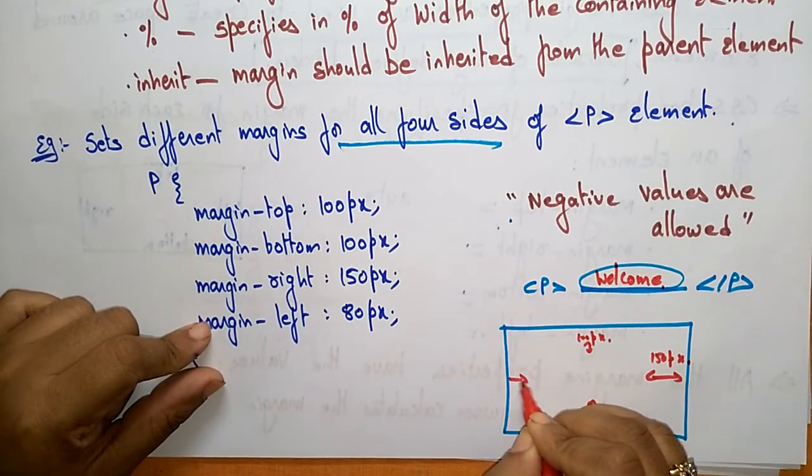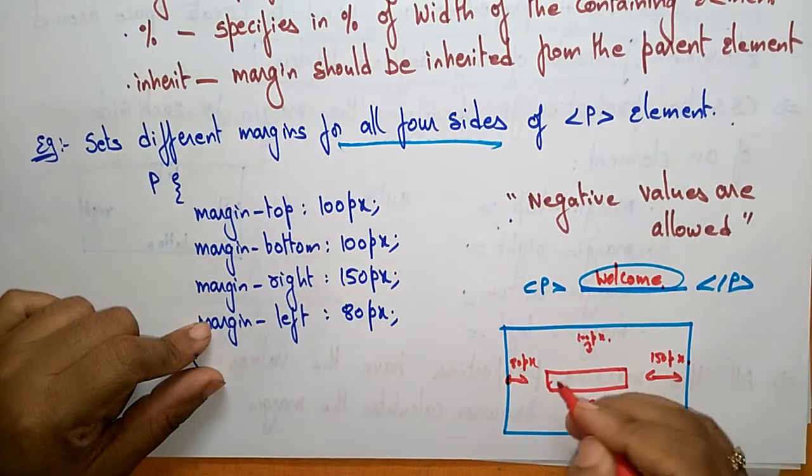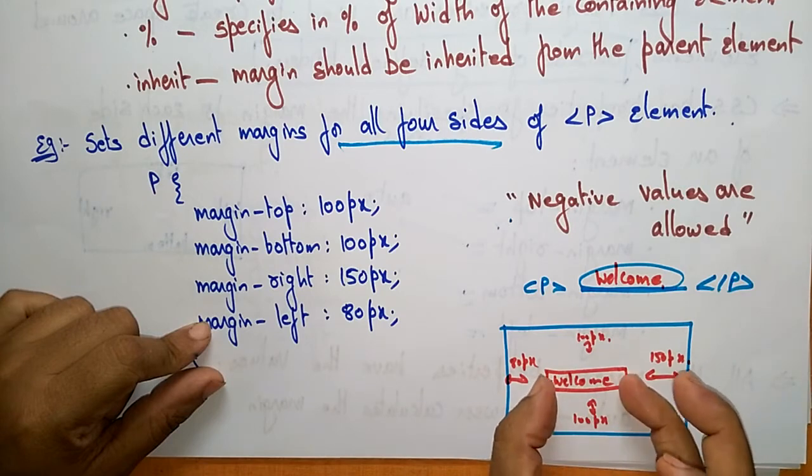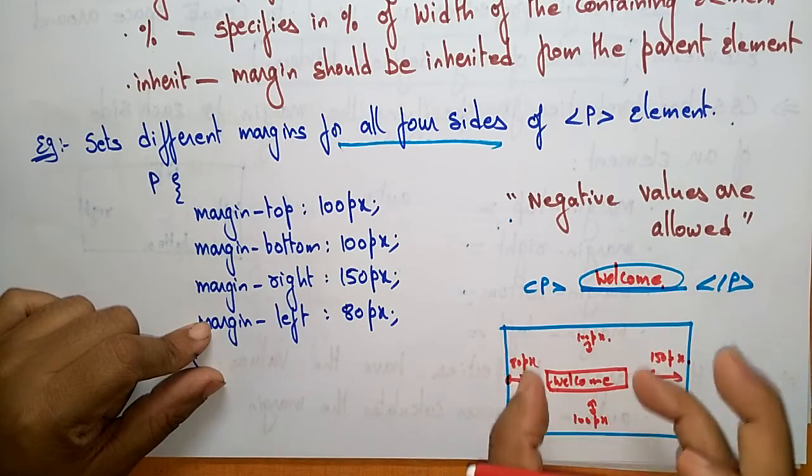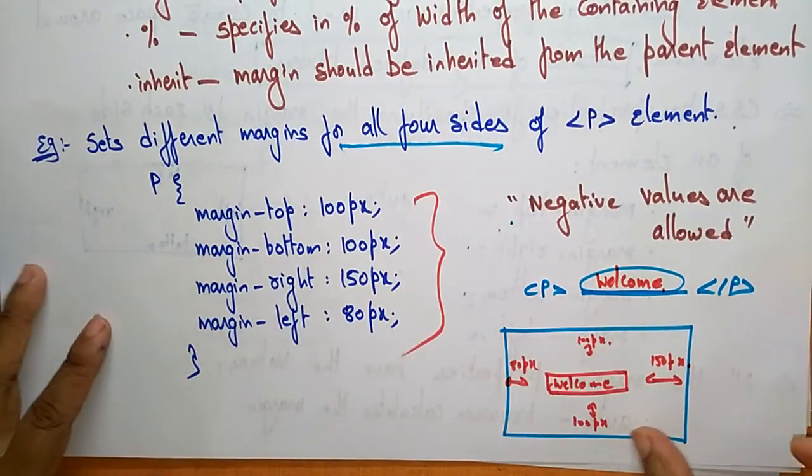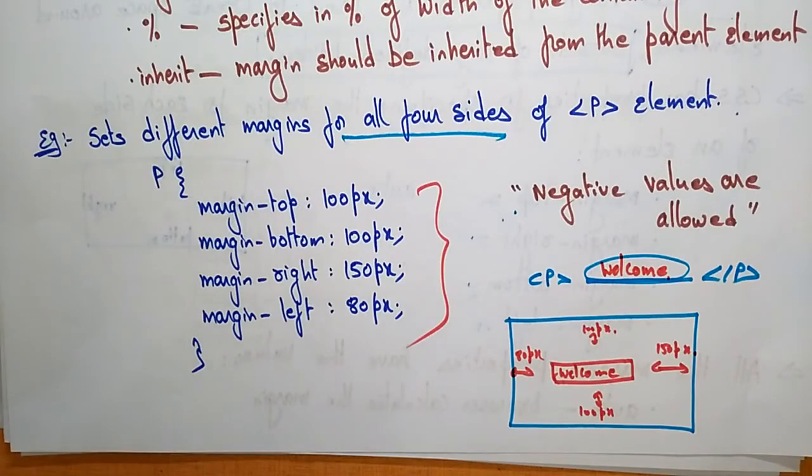And the left, you take 80 pixels. Here you're going to print the message like 'welcome' - that is a paragraph. The statement has to appear where on the page? By using the margin property here, you're going to do that. Okay, thank you.